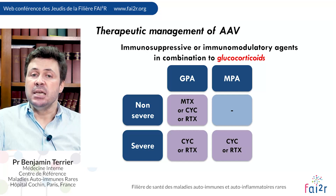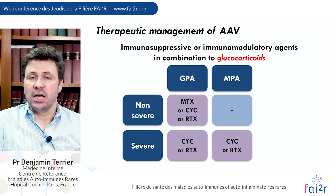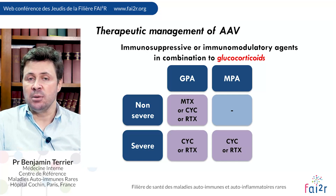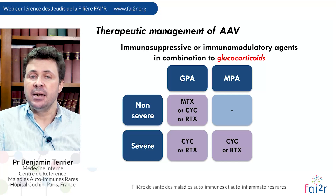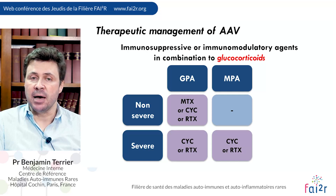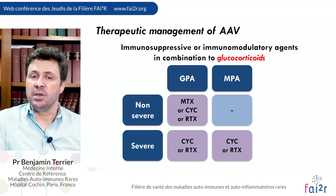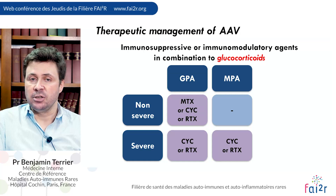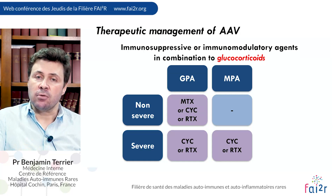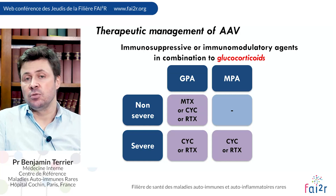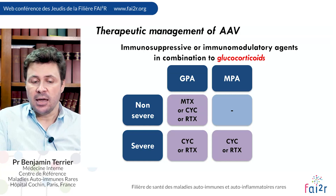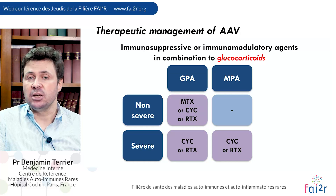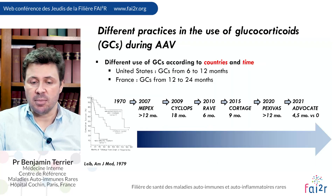In GPA, granulomatosis with polyangiitis, it's always a combination of glucocorticoids plus immunosuppressive agents, mainly cyclophosphamide or rituximab, even if methotrexate can be used in non-severe patients. In patients with microscopic polyangiitis, usually a non-severe disease is treated with glucocorticoids alone, and a severe disease with this combination of glucocorticoids plus cyclophosphamide or rituximab.